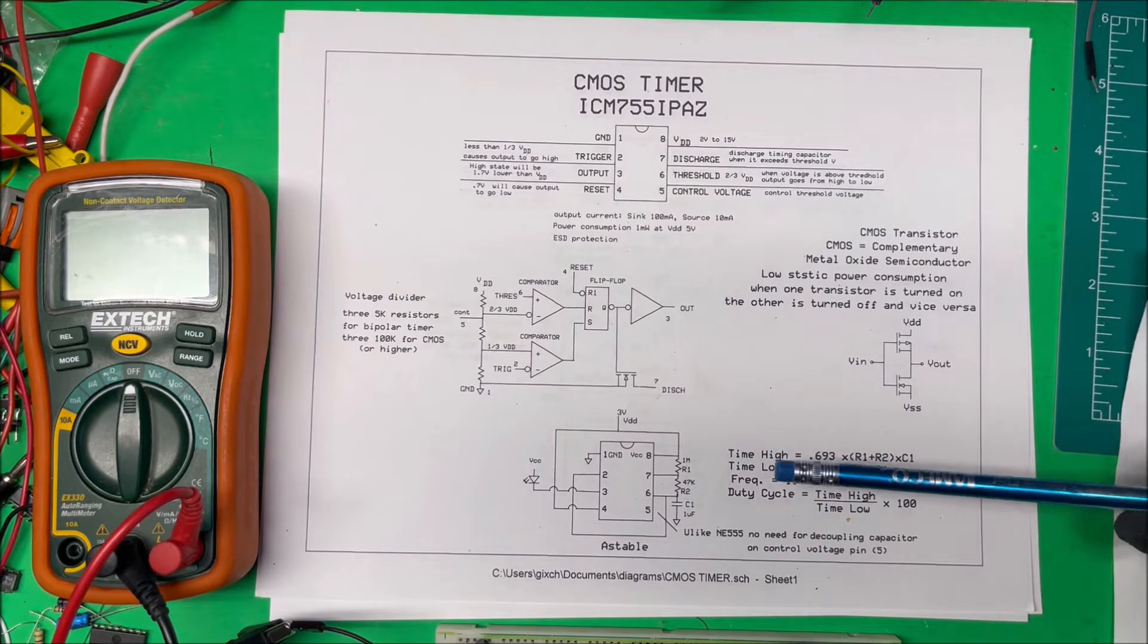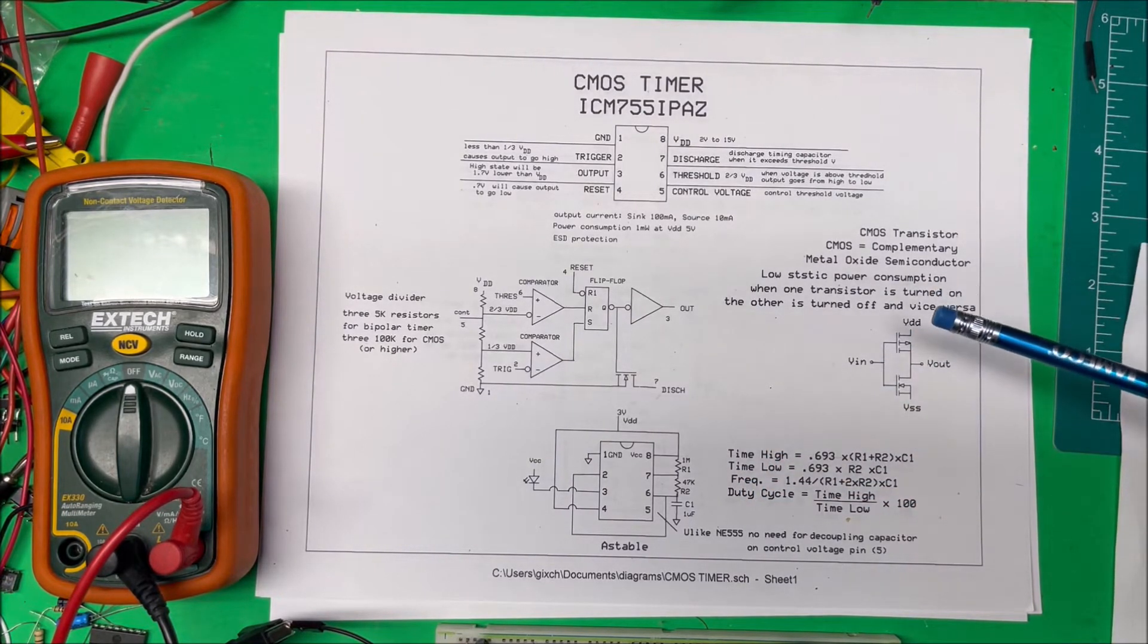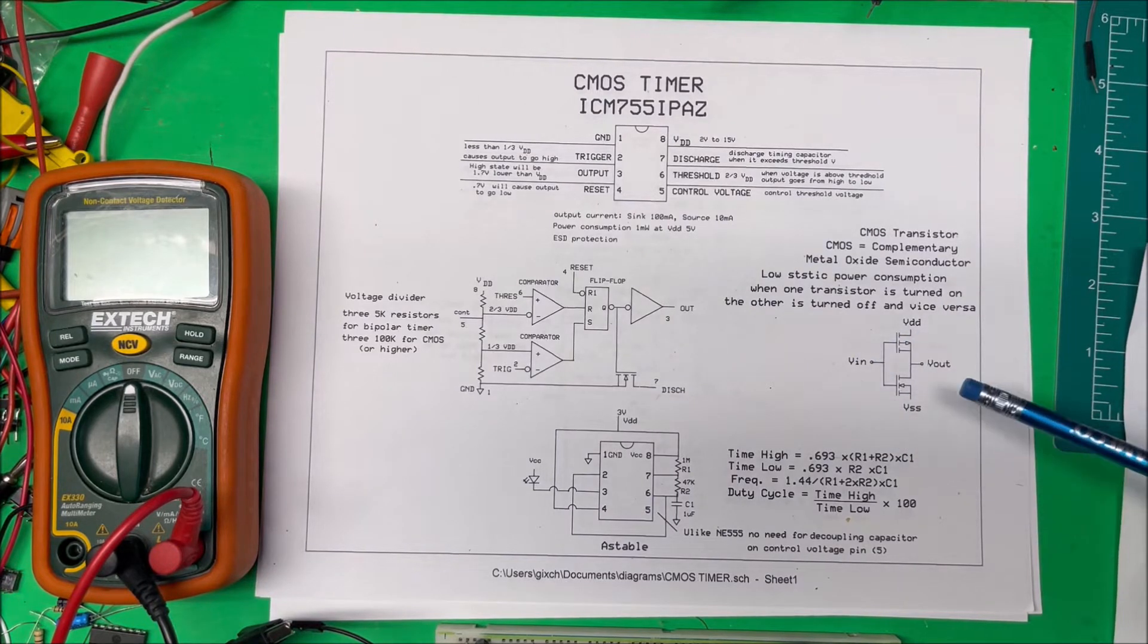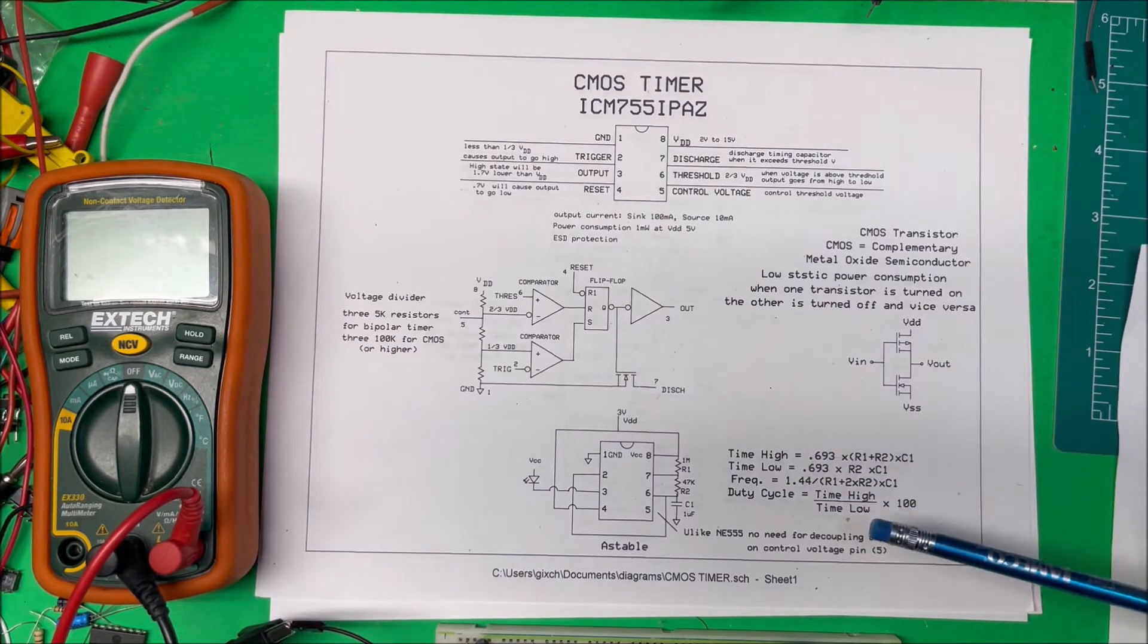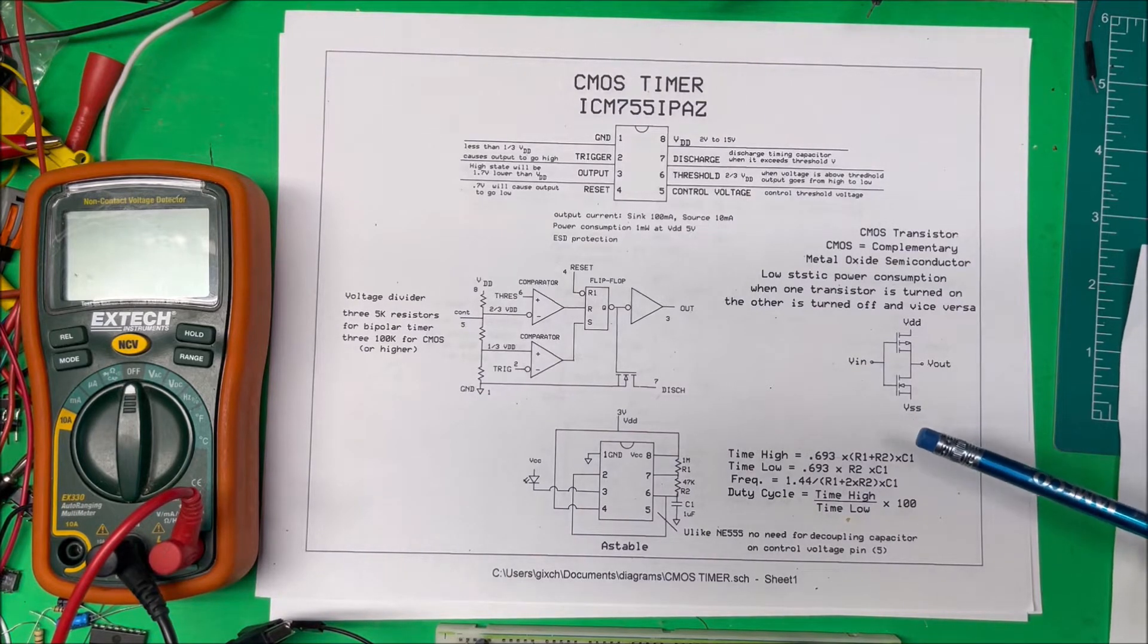So I ended up buying some from Digikey and with the shipping, it cost me about $1.80 a piece. But I got them and they're the real ones here. So I'm going to show you how to test them.